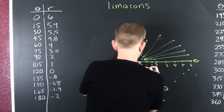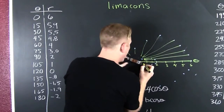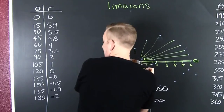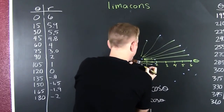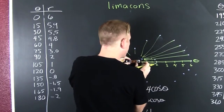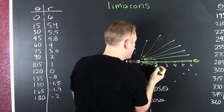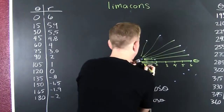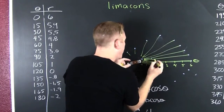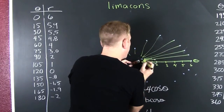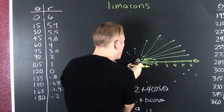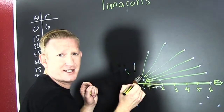Then at 150 degrees, it's going negative. And then at 165 degrees, it's like there. And now we're at the half circle and it's at zero. Then we're over here and we're still going negative — and then our r is back to nothing.